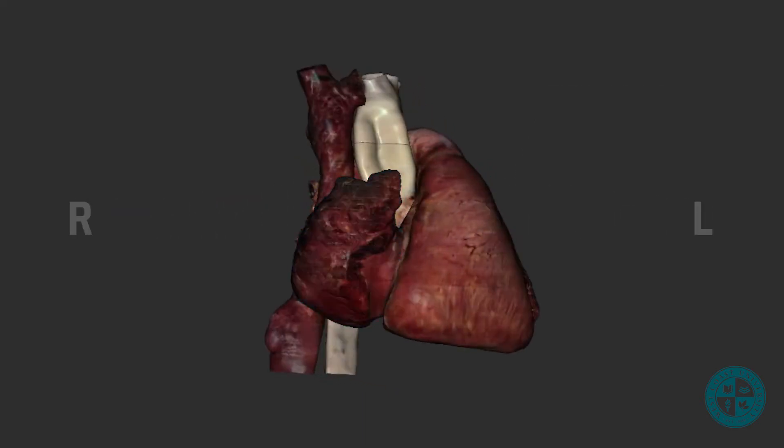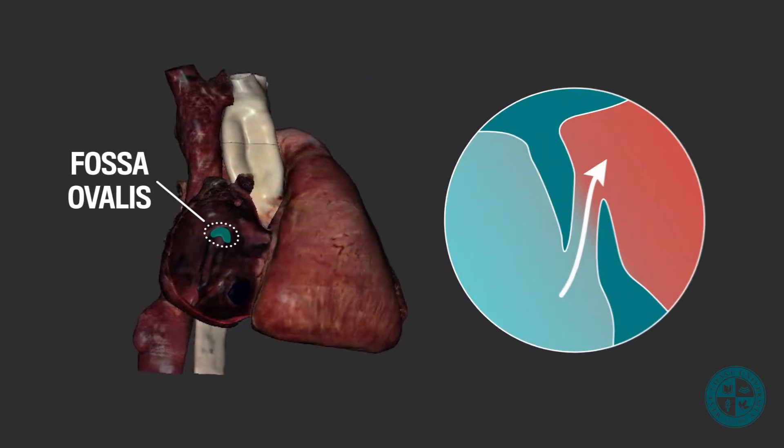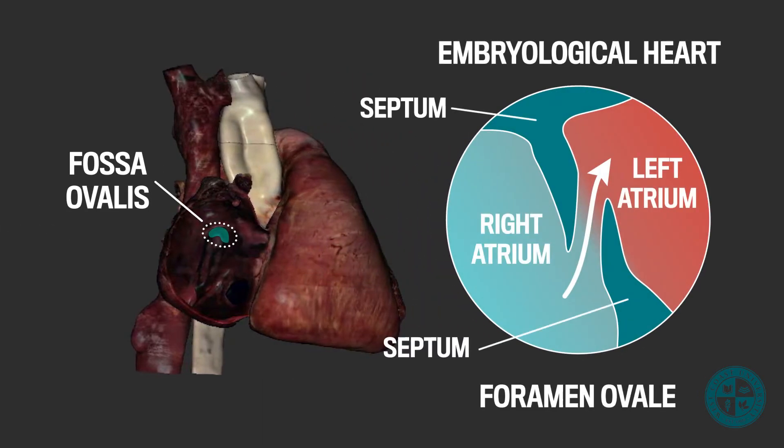On the interatrial septum, you will see a small oval depression called the fossa ovalis. This structure represents the closure of the foramen ovale, which is present in the embryological heart to allow blood to flow directly from the right atrium to the left atrium. If the foramen ovale fails to close after the baby is born, this can lead to a reduction in cardiovascular efficiency and increased pressure in the pulmonary vessels.